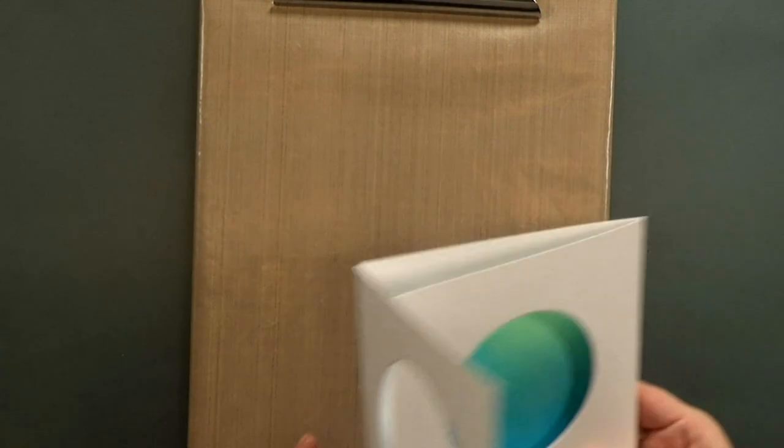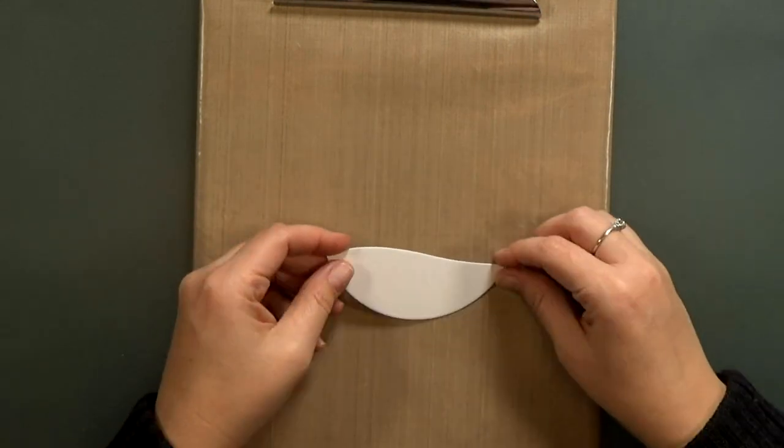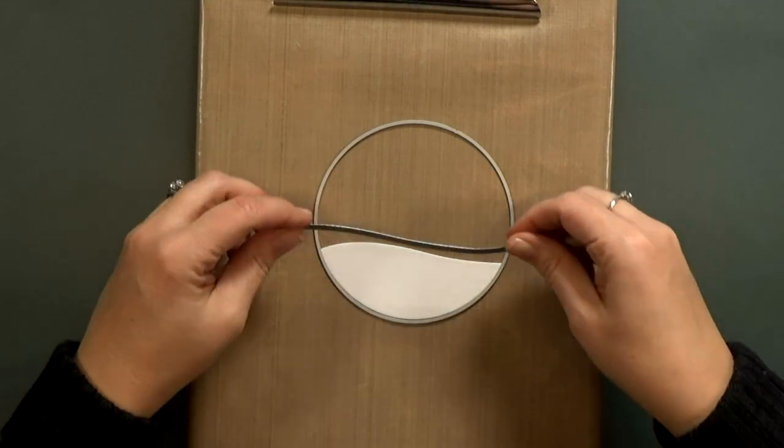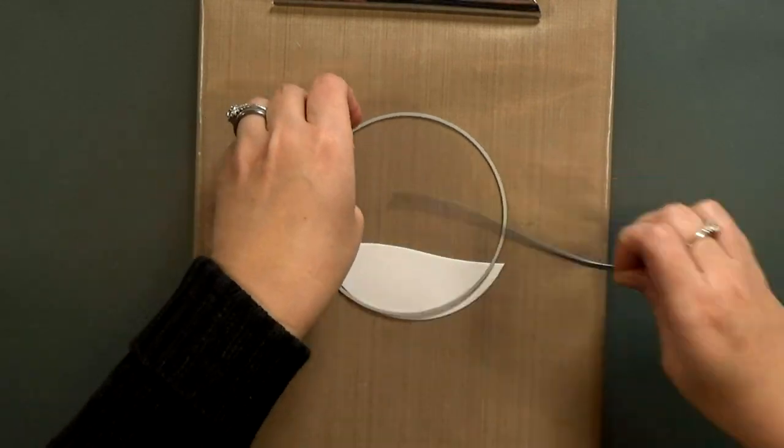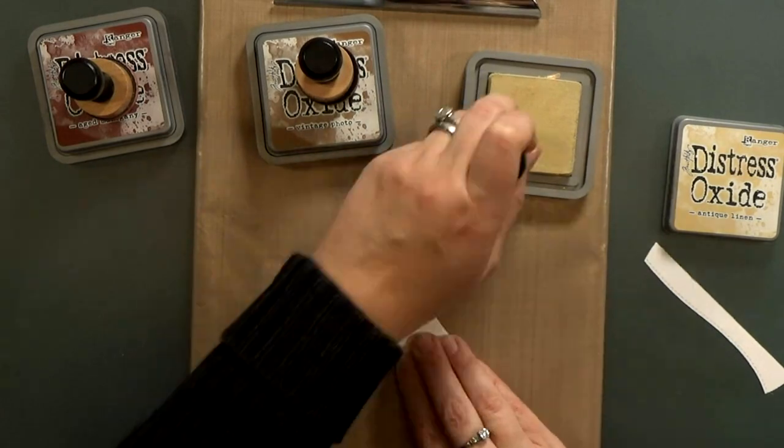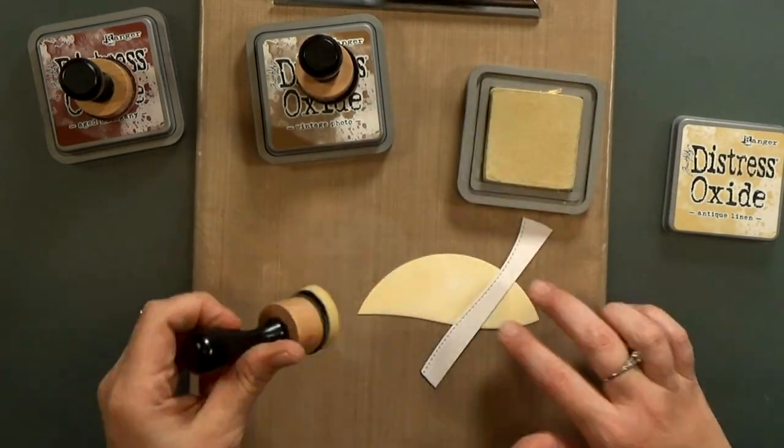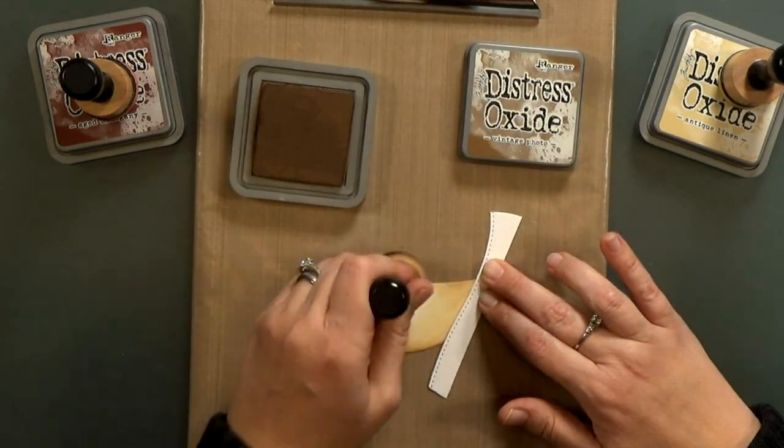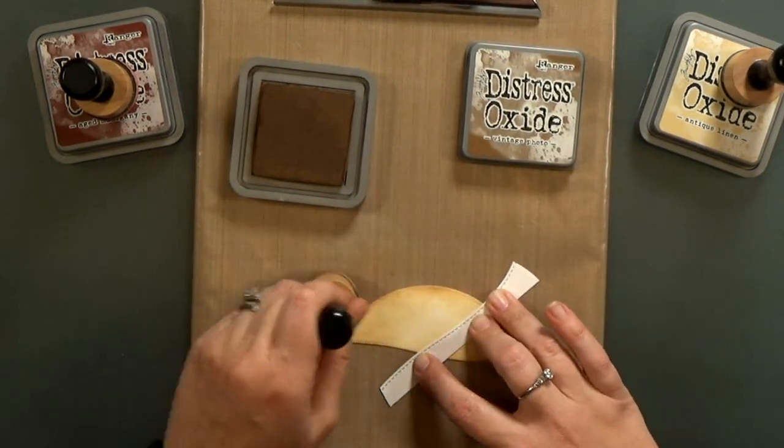And I need to make one more element for this card, the sandy bottom. I use my largest circle die and then a wavy border to cut it out and I'm going to use antique linen, vintage photo and aged mahogany distress ink to color it. And I just lightly stamped some texture on with the two darker colors.